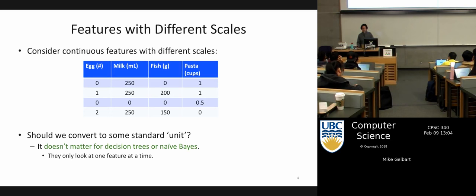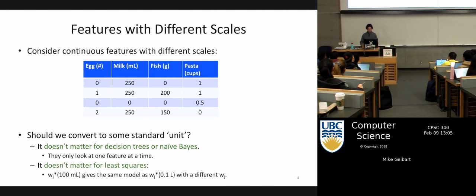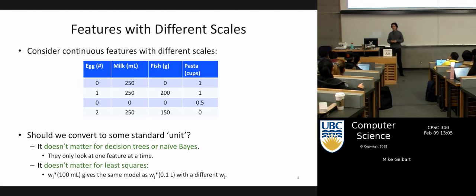With decision trees it doesn't matter, because we get to pick the thresholds to be whatever we want — if I double or multiply by 1,000 my units, my threshold is just going to be correspondingly bigger but everything's the same. For ordinary least squares linear regression, it also doesn't matter because each feature gets its own W; if I scale the feature, I can just correspondingly scale the W.